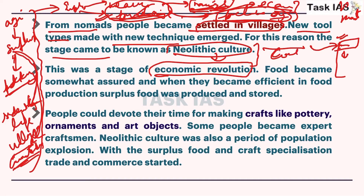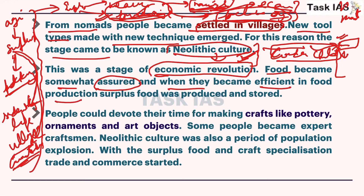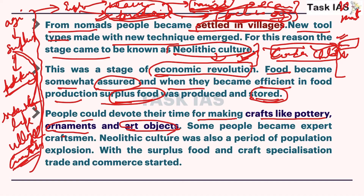Food became somewhat assured in Neolithic because man started to control nature, and when they became efficient in food production, surplus food was also produced, creating storage needs. People could devote their time for making crafts like pottery, ornaments, and art objects - if someone had surplus, they had luxury time to think about other activities. Now with a more developed brain capable of multitasking, people went for ornaments and art objects, and other dimensions of creativity emerged. Some people became expert craftsmen. Neolithic culture was also a period of population explosion, because with surplus and control over nature, deaths due to continuous hunting migration or search for water and food decreased.